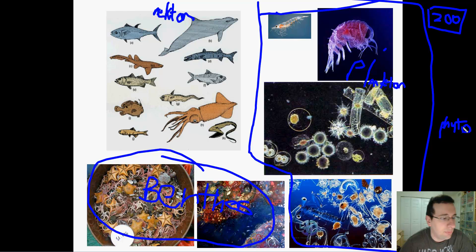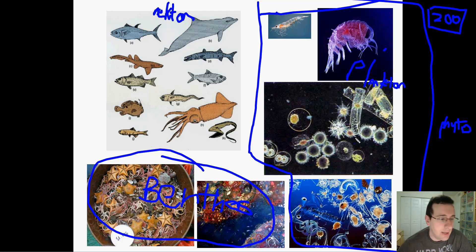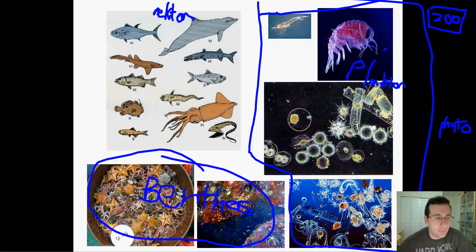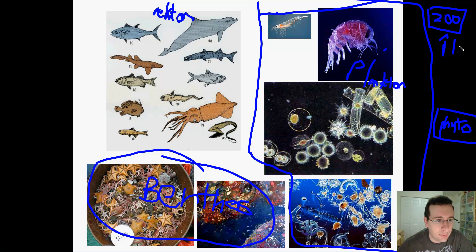Phytoplankton only needs basic nutrients and sunlight to perform its activities. Examples include algae, cyanobacteria, or bacteria that live near volcanic vents. So phytoplankton are the autotroph version of plankton, while zooplankton are the heterotroph version.